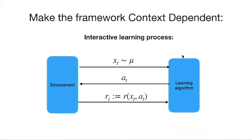Think of this as two components interacting every day. The environment proposes a context, maybe IID sampled from a distribution mu. The algorithm sees the context and recommends an action. The environment receives that action and returns feedback — how good your action is given the current context. This process repeats many times, and the hope is the learning algorithm gradually improves its ability to recommend actions.